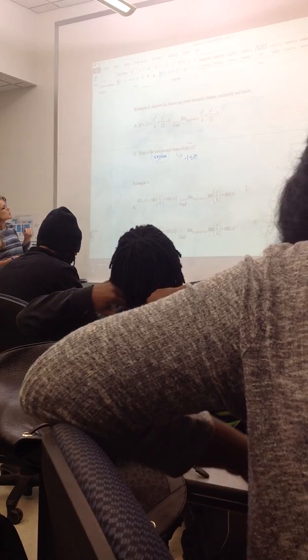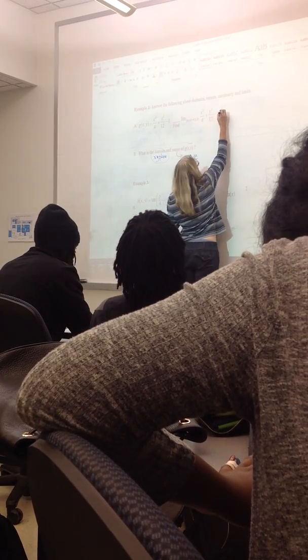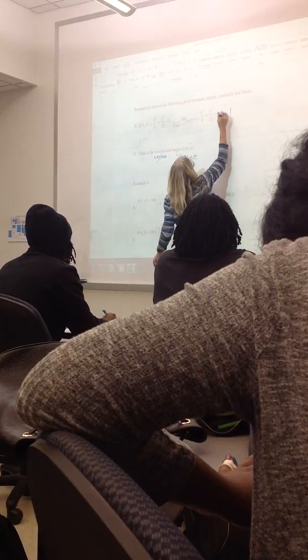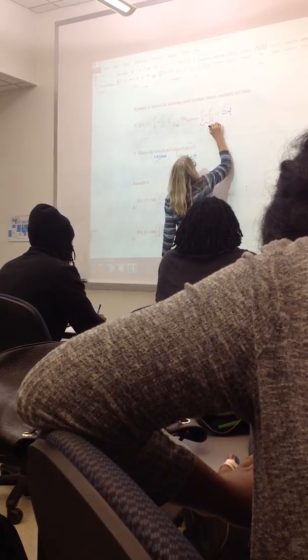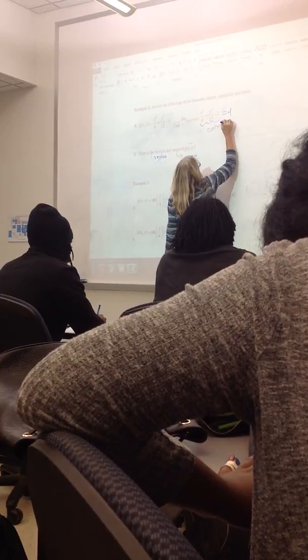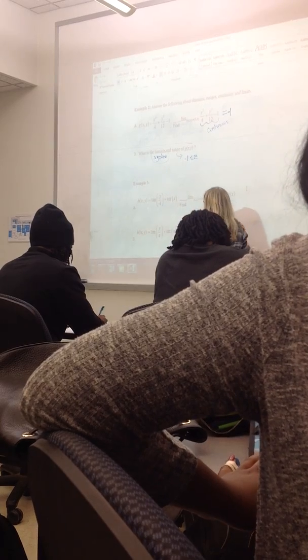The limit as I approach zero, zero is also negative one, because this polynomial is a continuous function. And so because the function is continuous, the limit is going to be what you get when you plug in the point. So let's plug the point in.